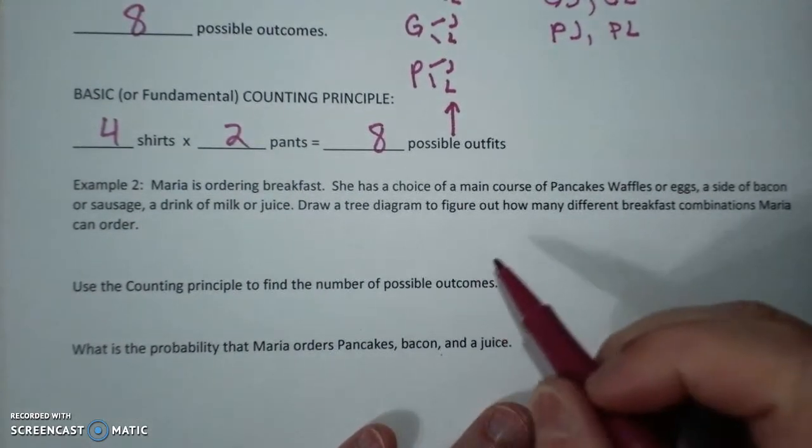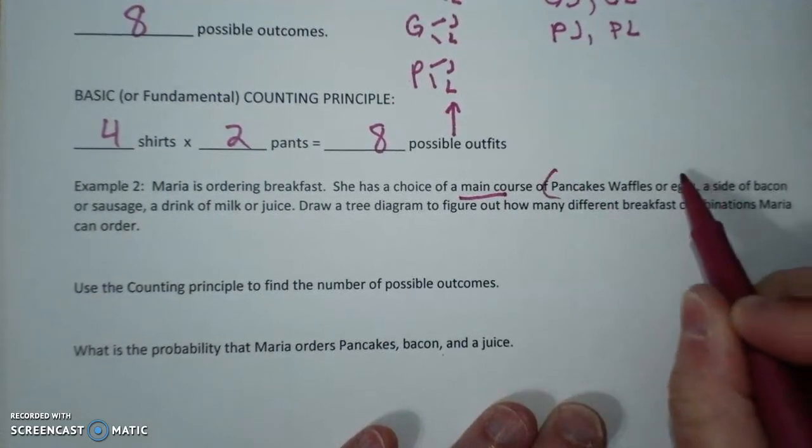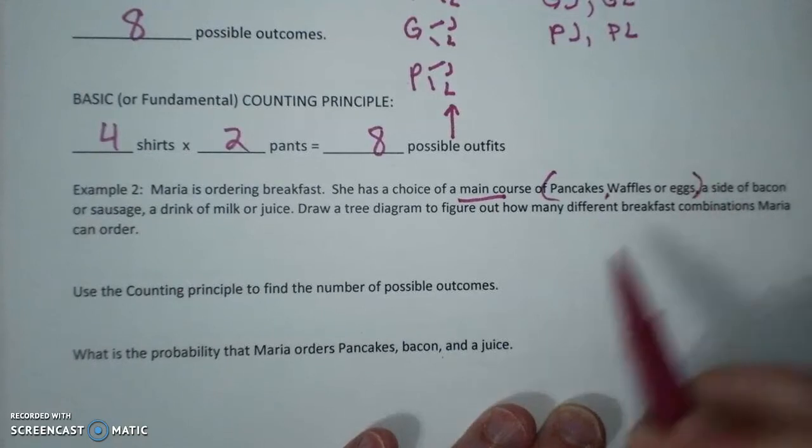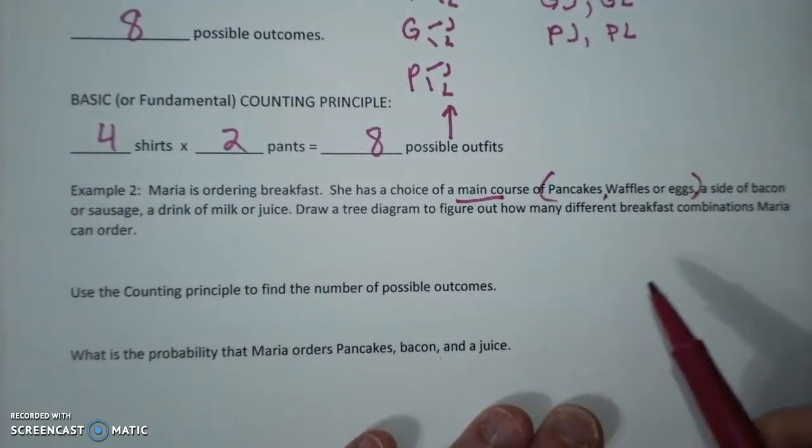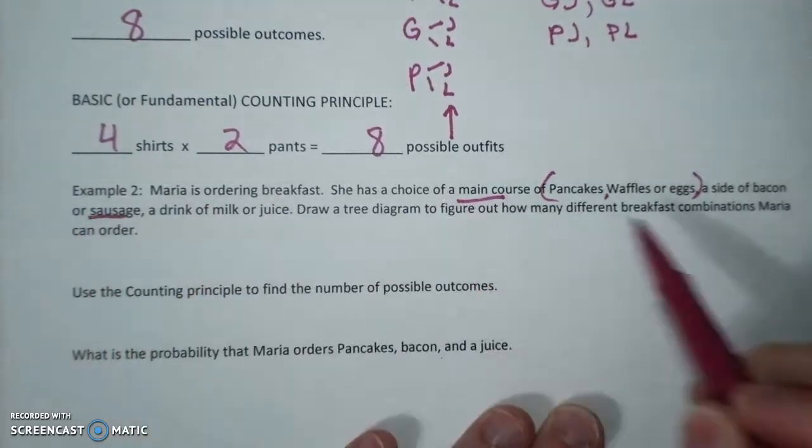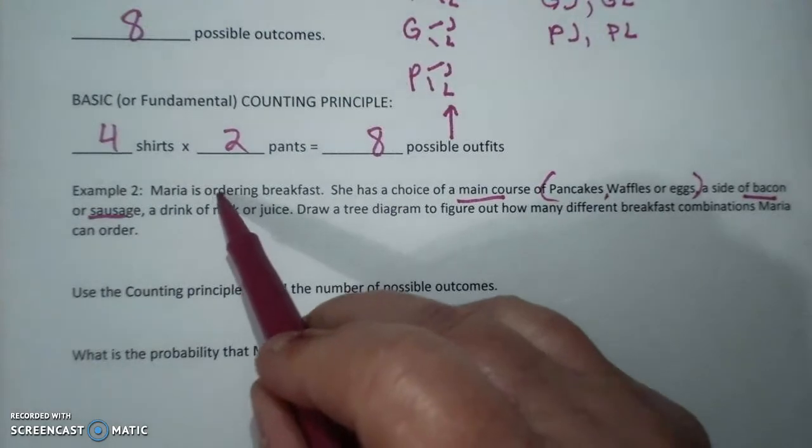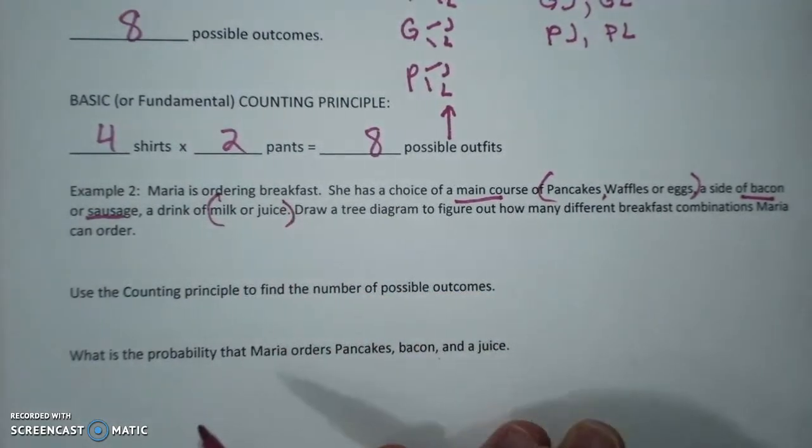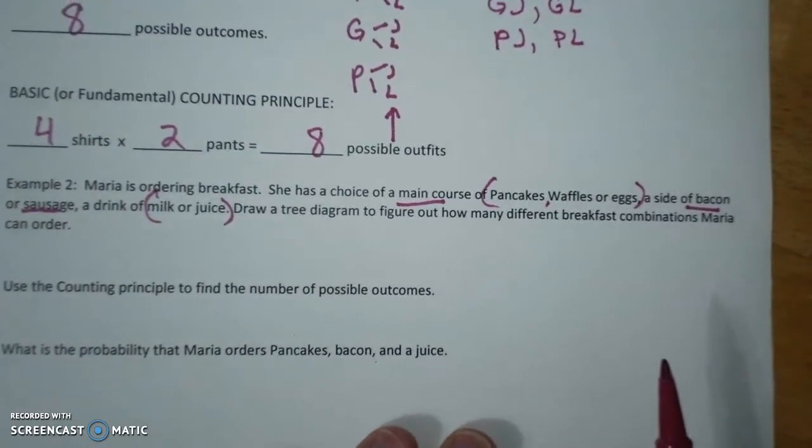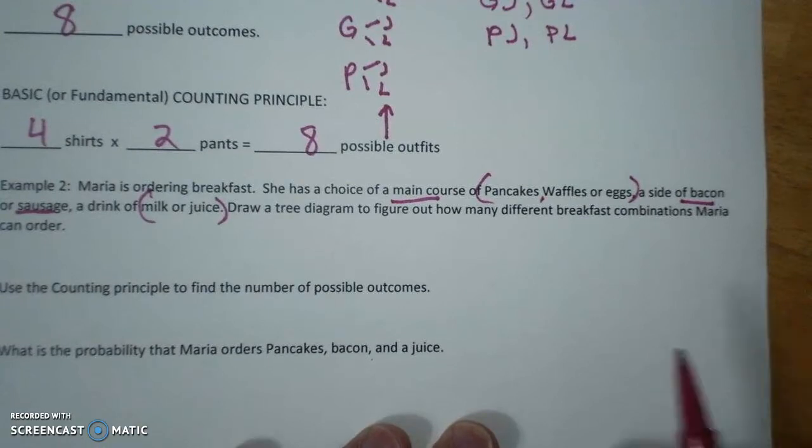Speaking of which, Maria is ordering breakfast. She has the choice of a main course. Pancakes, waffles, or eggs. I'm going to draw sides of bacon or sausage. A drink of milk or juice.